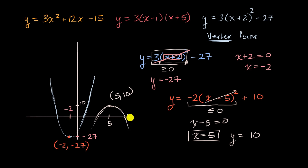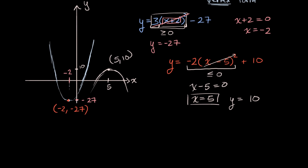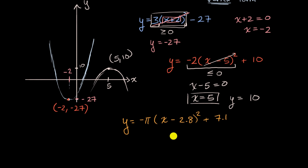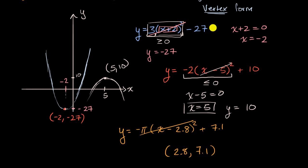Let's do one more example so we get really fluent at identifying the vertex from vertex form. Say we have y is equal to negative pi times x minus 2.8 squared plus 7.1. What is the vertex? The x-coordinate is the x value that makes the squared term equal to zero, which is 2.8. Then this whole thing is zero and y is going to be 7.1. So now you hopefully appreciate why this is called vertex form — it's quite straightforward to pick out the vertex when you have something written this way.